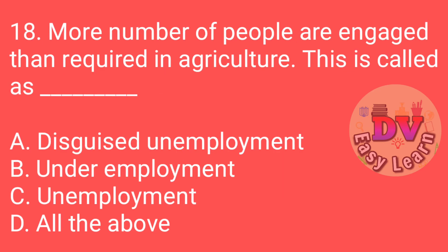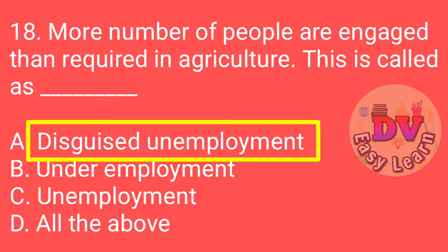Q18: More number of people are engaged than required in agriculture. This situation is called Disguised Unemployment.